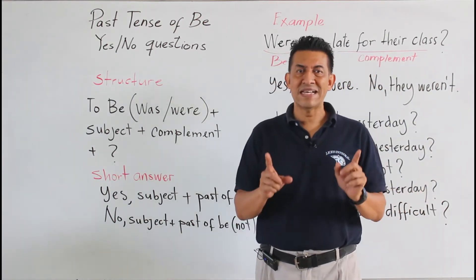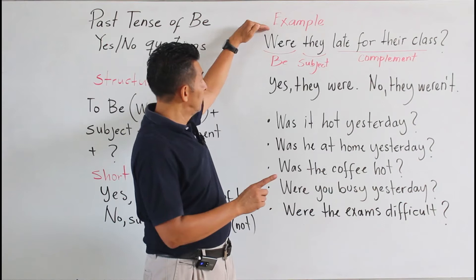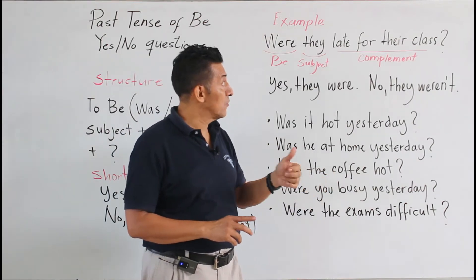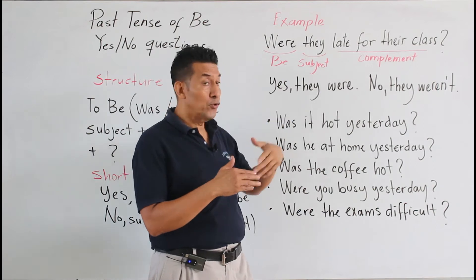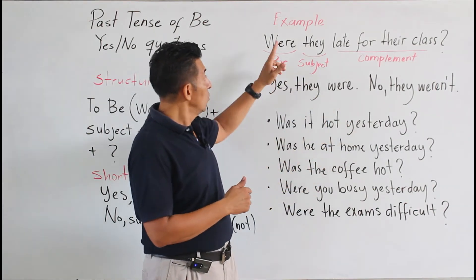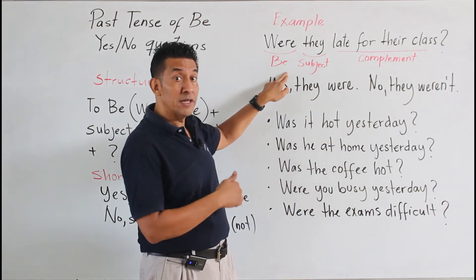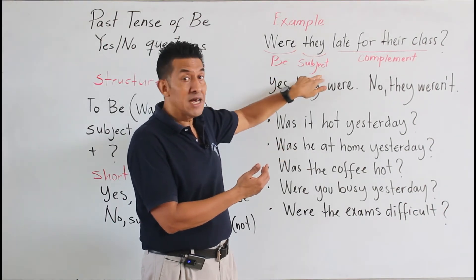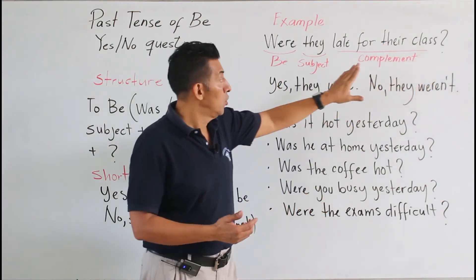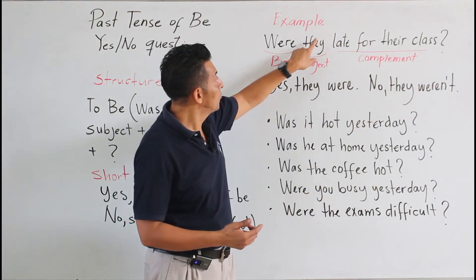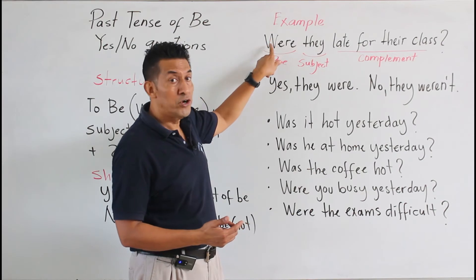Now let's read the first example. It says were they late for their class. Were they late for their class. Take a look. This is the verb be at the beginning of the sentence. This is the subject and this is the complement.